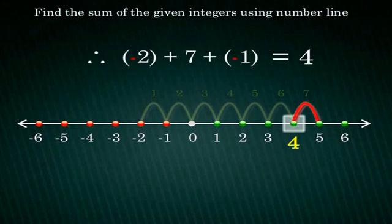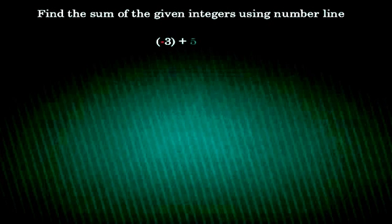You can do this for as many numbers as possible. But make sure all your steps are correct. Try solving the following problems on your own to check if you have understood doing addition on a number line. Find the sum of the given integers using number line. That is negative 3 plus 5 plus negative 2.